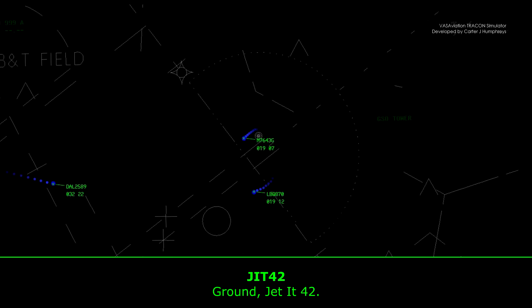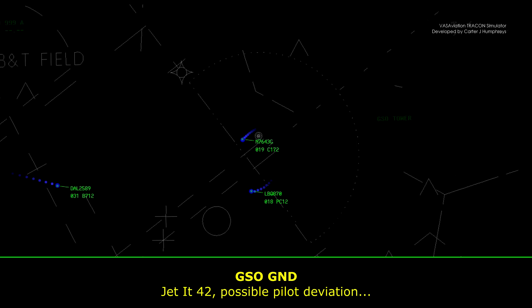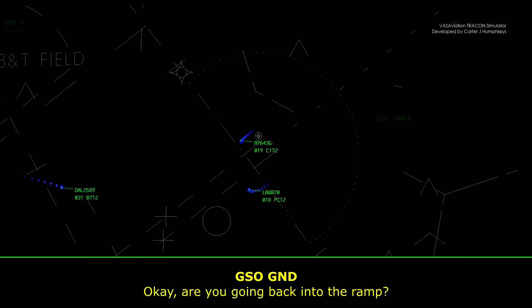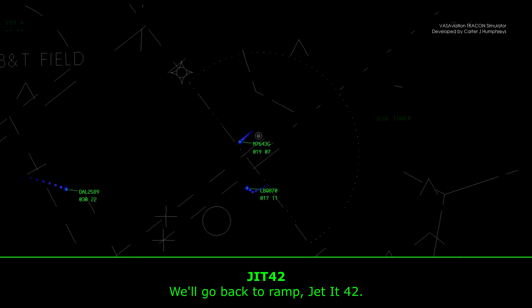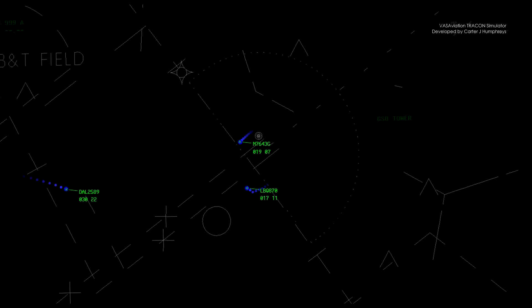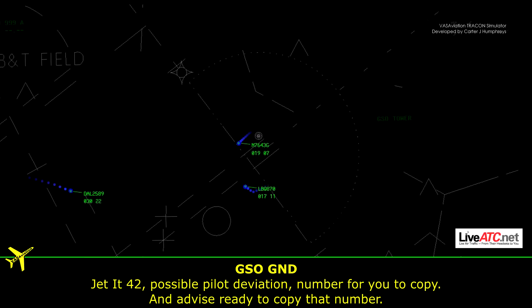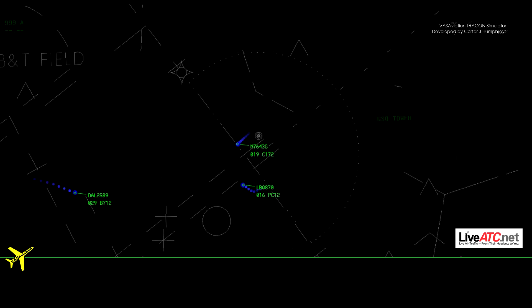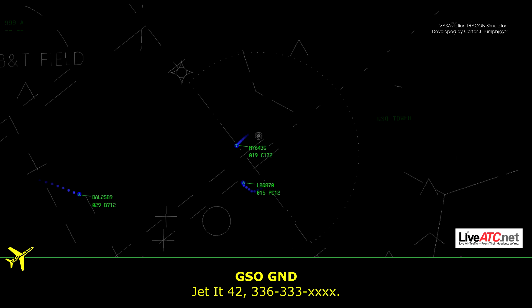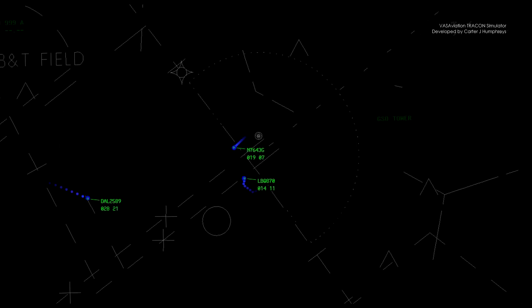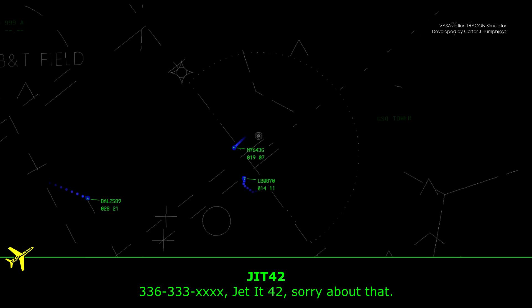Ground, Jet 4-2. Jet 4-2, pilot deviation. Okay, are you going back into the ramp? Yeah, I'm going to go back to the ramp, Jet 4-2. Jet 4-2, pilot deviation — number for you to copy. Ready to copy that number, Jet 4-2. Jet 4-2, it's 3-3-6, 3-3-3. Readback: 3-3-6, 3-3-3. Jet 4-2, sorry about that.